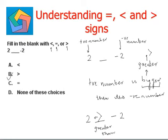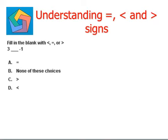Let's look at the next question. Fill in the blank with equal to, less than, or greater than sign. We're given three and negative one. Here also, this is a positive number and this is a negative number. As per our knowledge, the positive number is always greater than the negative number. So we fill in the blank space with the greater than sign. This is option C.